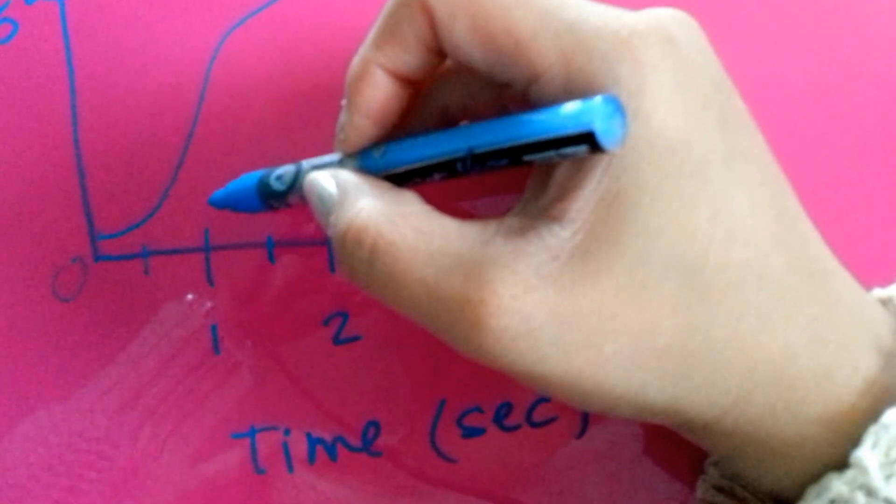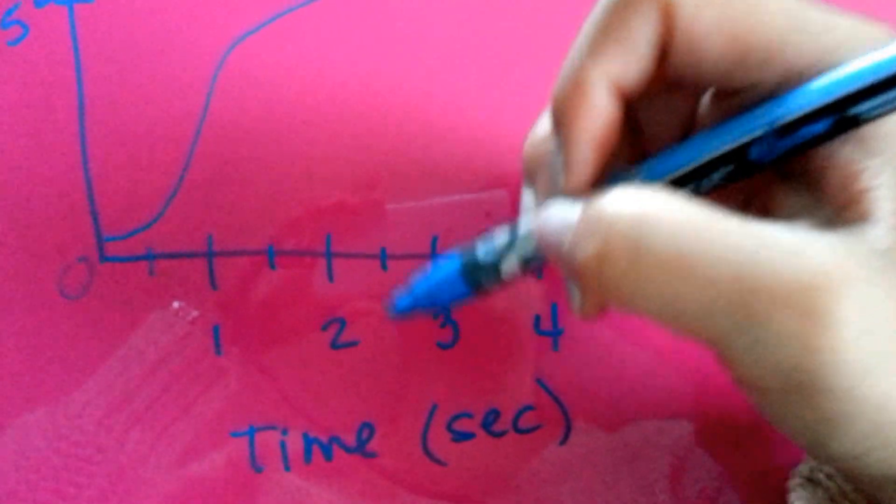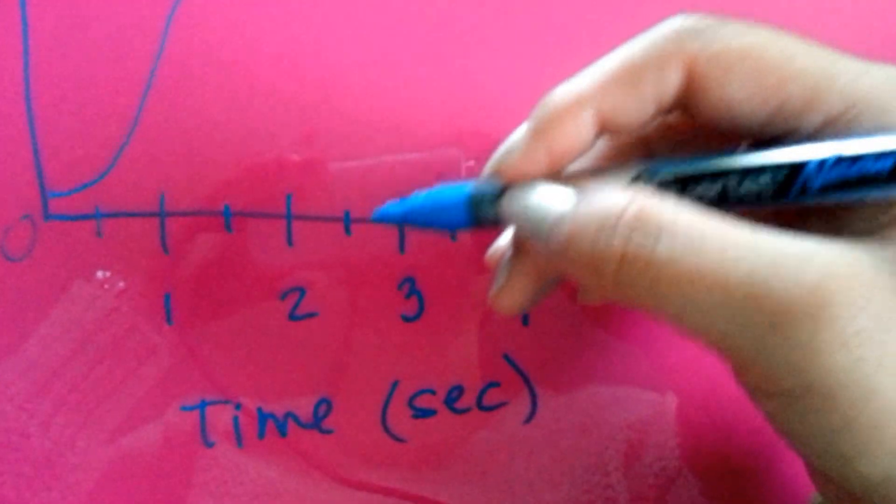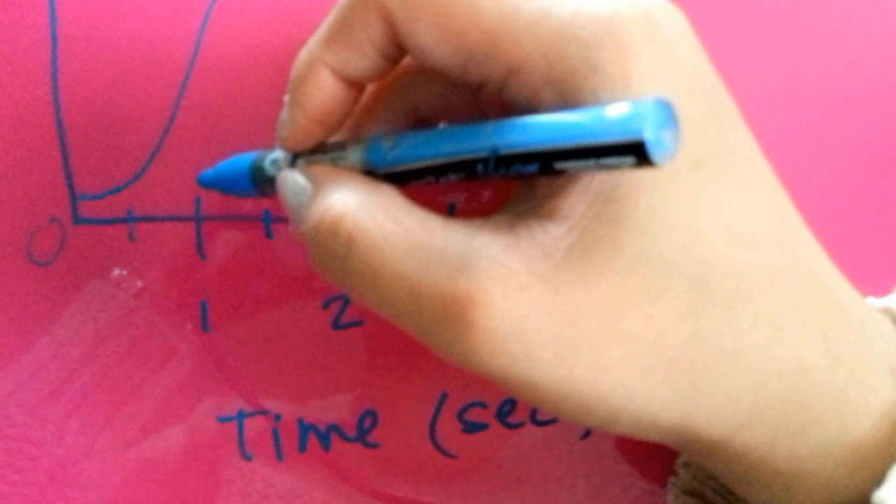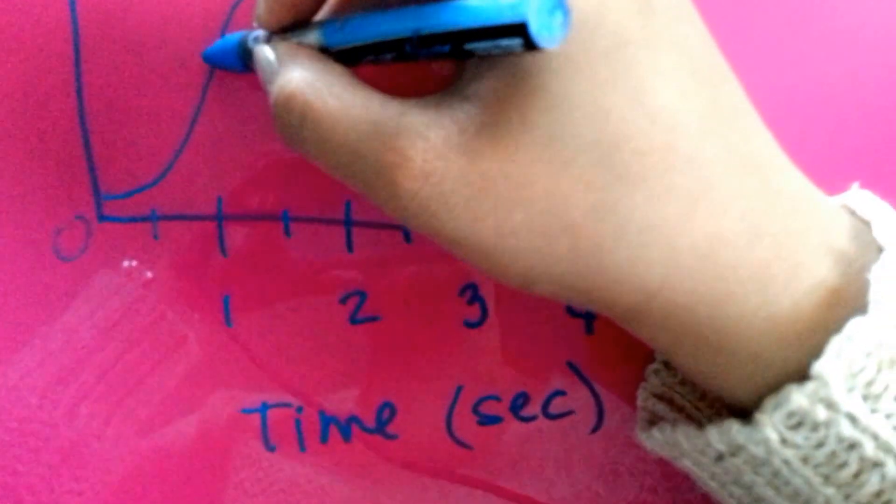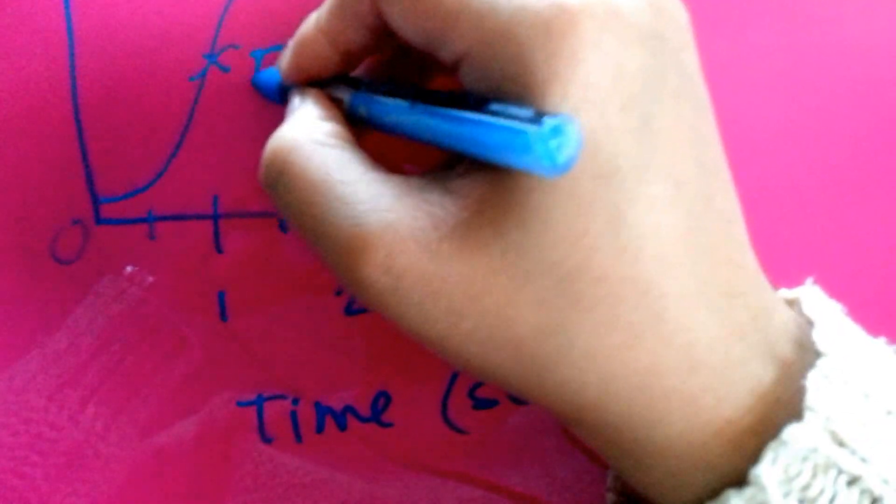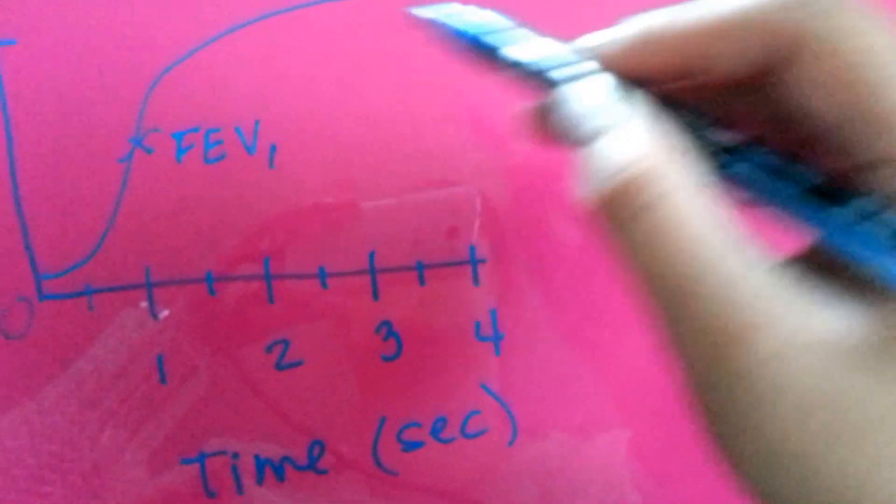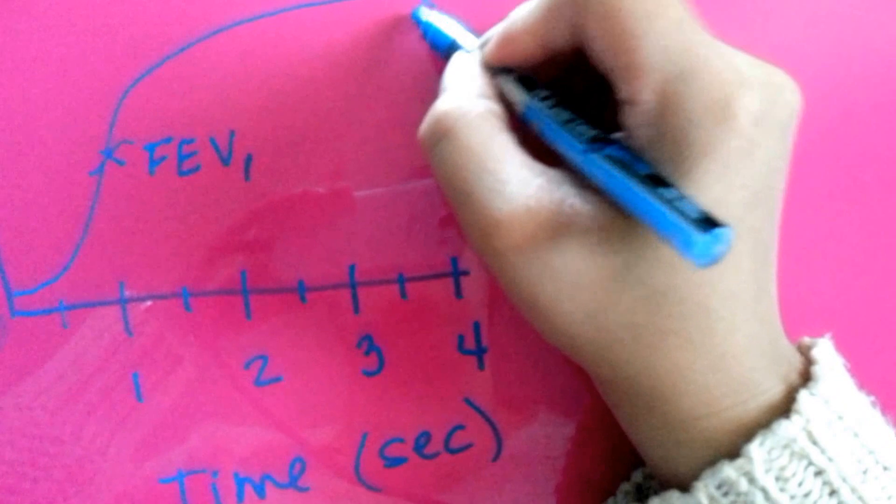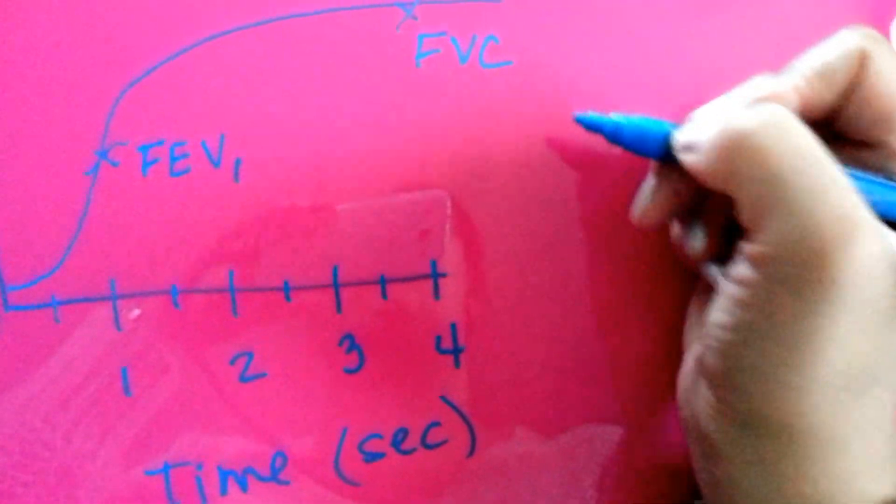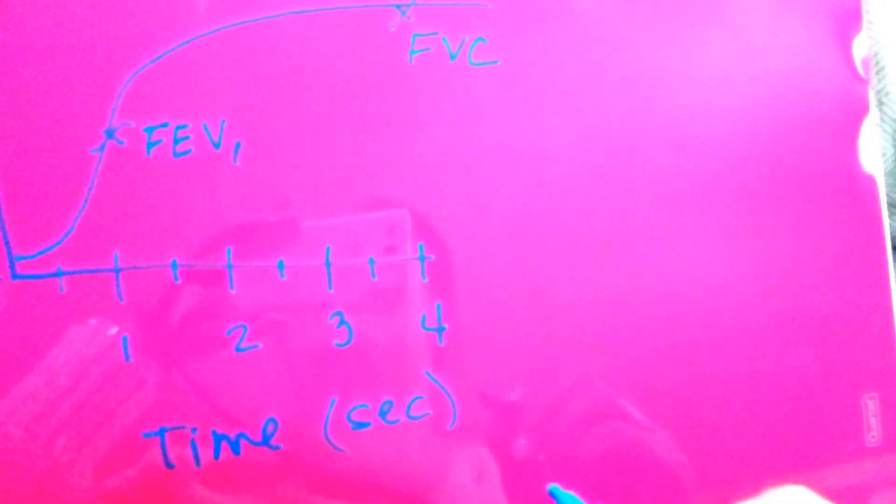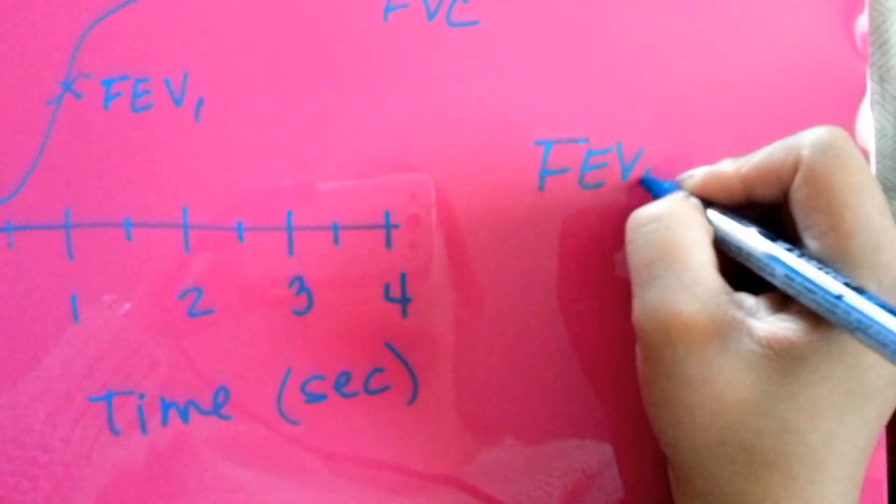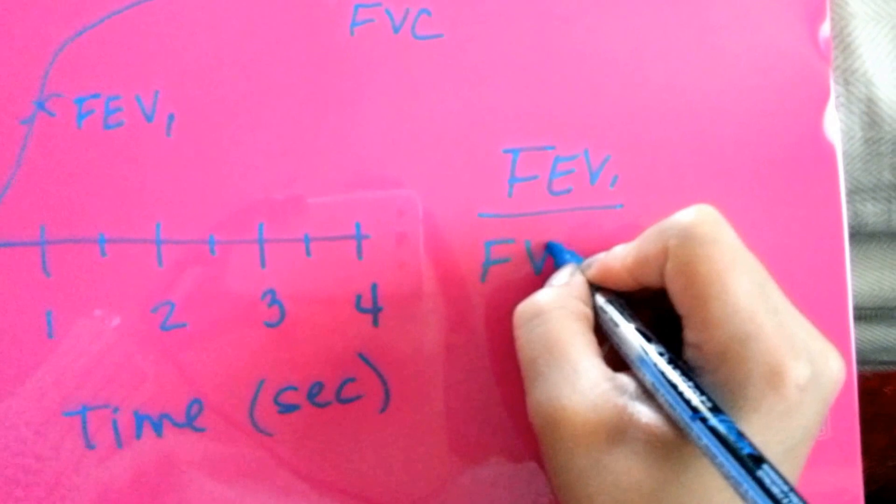We're going to measure in one second for the forced expiratory volume. The FEV is the amount of gas expelled during specific time intervals of the FVC. This is one second right here. This is the FEV. And this up here is the FVC, forced vital capacity. Finding the total ventilation, we have to take the FEV sub 1 divided by FVC.